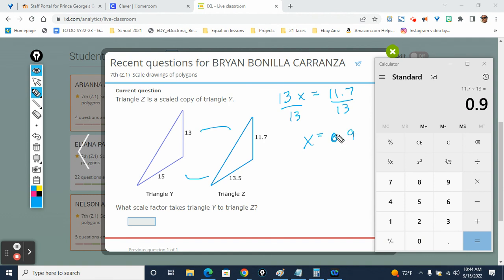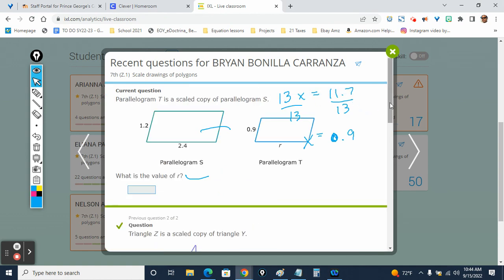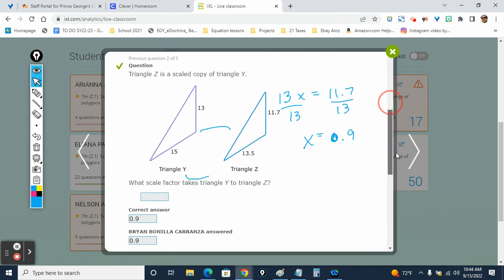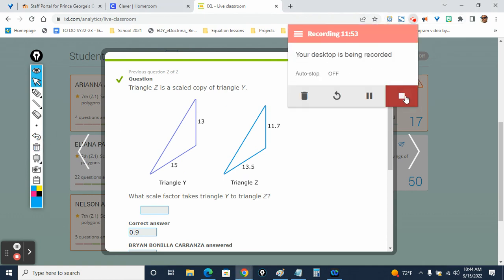0.9. It's correct. 0.9. There it is. All right so I think I'm gonna chill out right there. Boom 0.9.